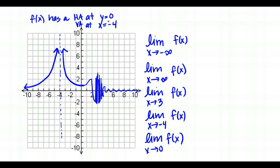In the last function, the horizontal asymptote is at y equals 0 and the vertical asymptote is at x equals negative 4. The limit as X approaches negative infinity: my Y values get closer and closer to 0 because of the horizontal asymptote. The limit as X approaches positive infinity: the function oscillates but gets closer and closer to 0 as we move further toward positive infinity, so this limit is 0.